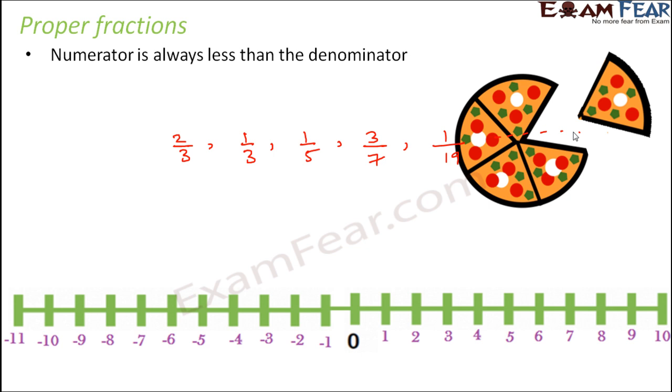So when we talk about how many slices of the pizza did you eat, you expect something like this: 1 slice out of 5 slices or 2 slices out of 5 slices. So 2 by 5, 1 by 5, 4 by 5, 3 by 5, these are all examples of proper fractions because in all of these the numerator is lesser than the denominator.